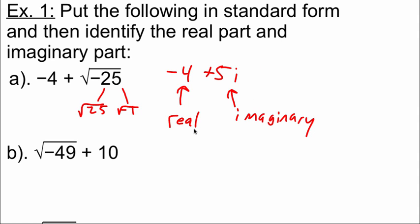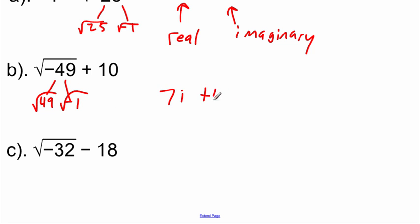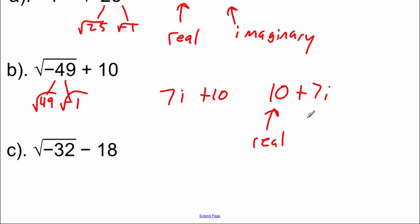With the next example, we've got the square root of negative 49 plus 10. I'll split it up into 49 and negative one. The square root of 49 is seven, the square root of negative one is i, and then we've got the plus 10 piece. To write in standard form, the real piece comes first and the imaginary piece second, so we flip it to 10 plus 7i.